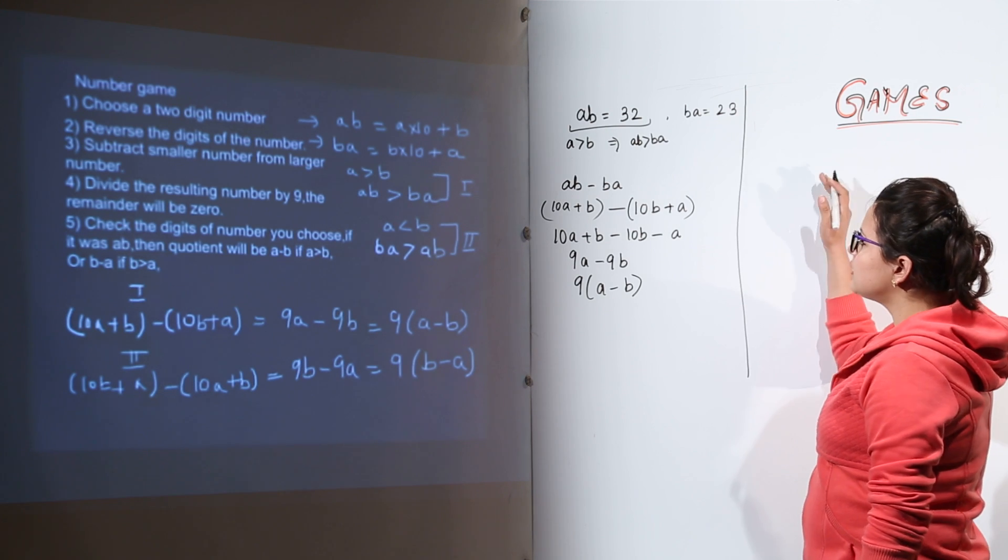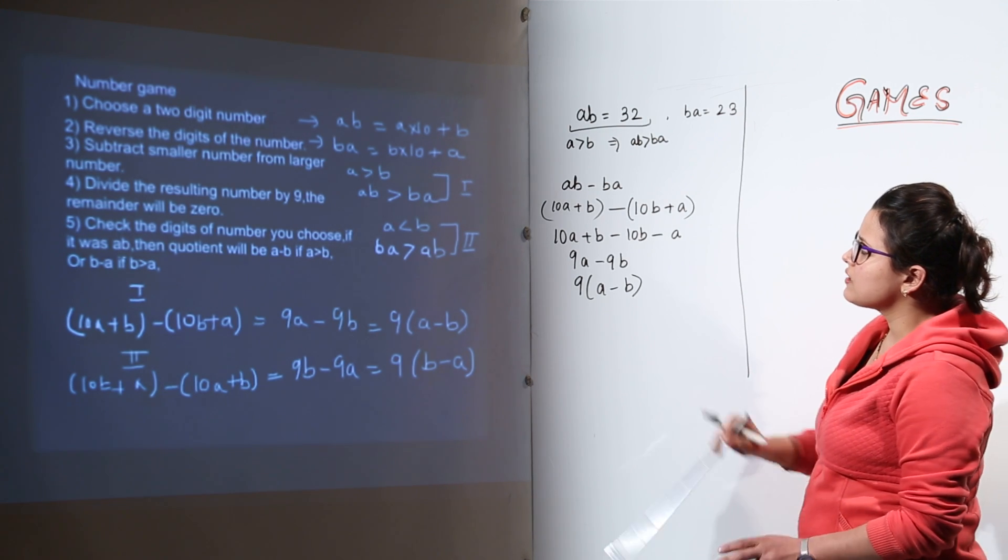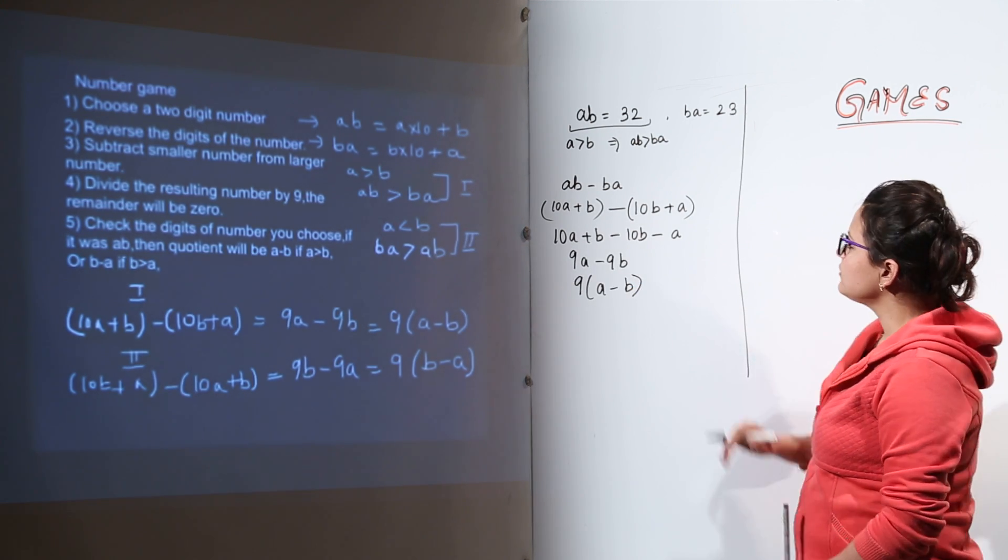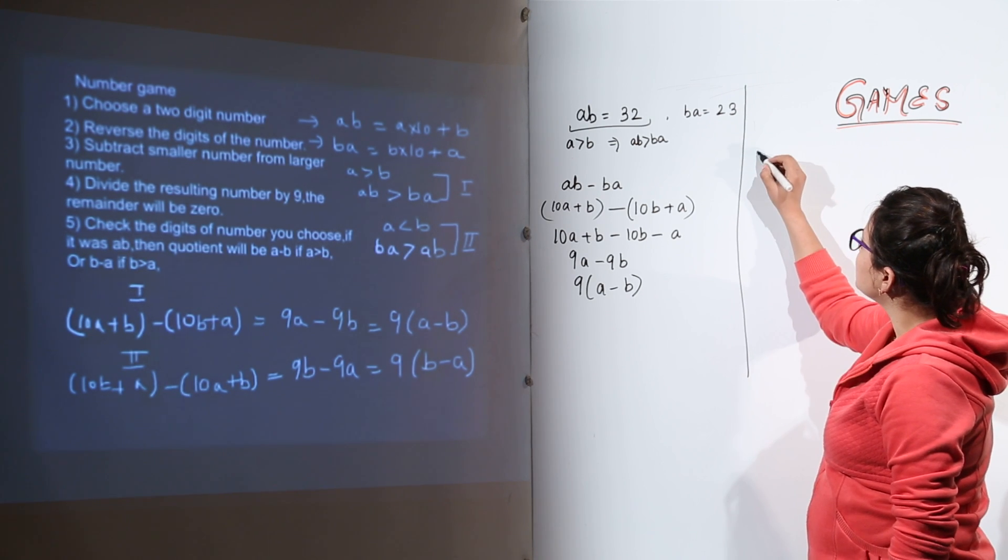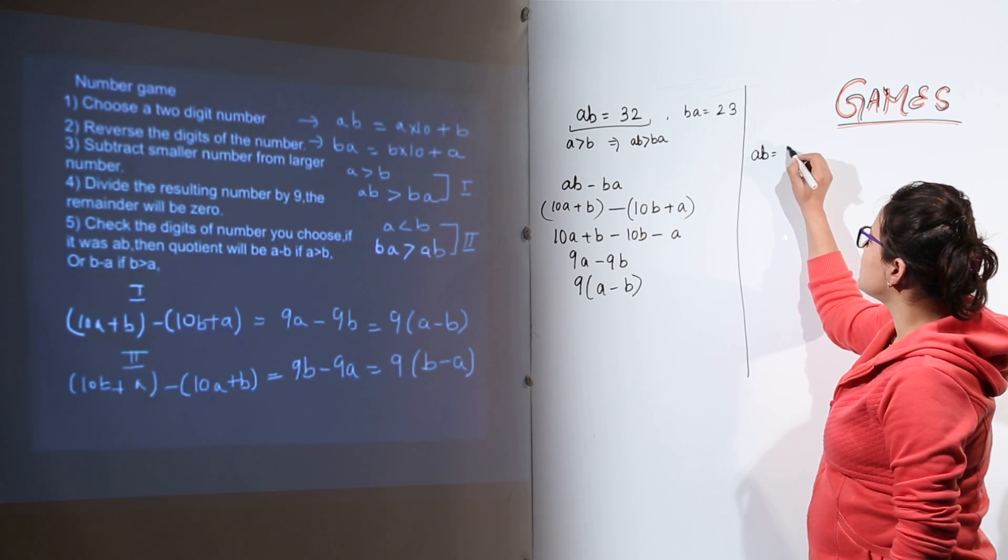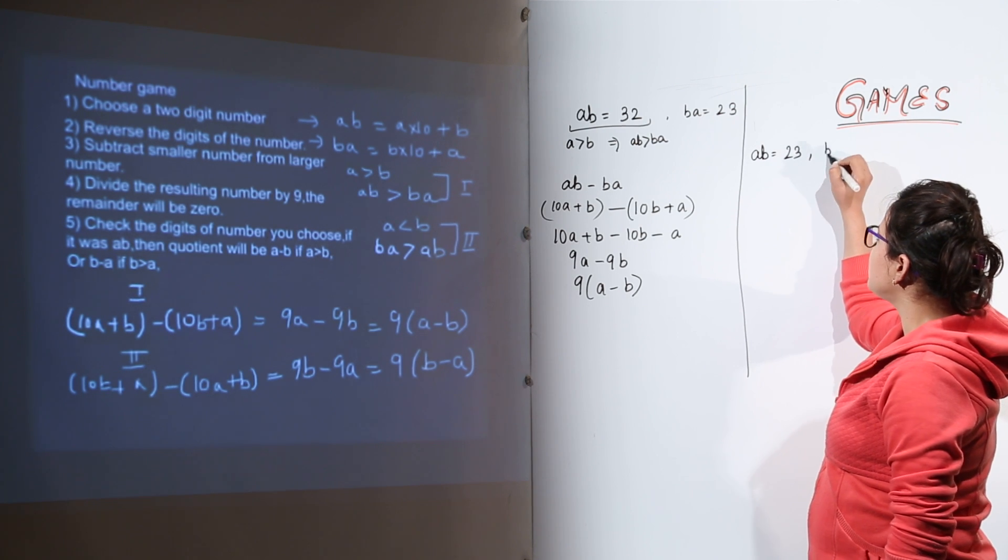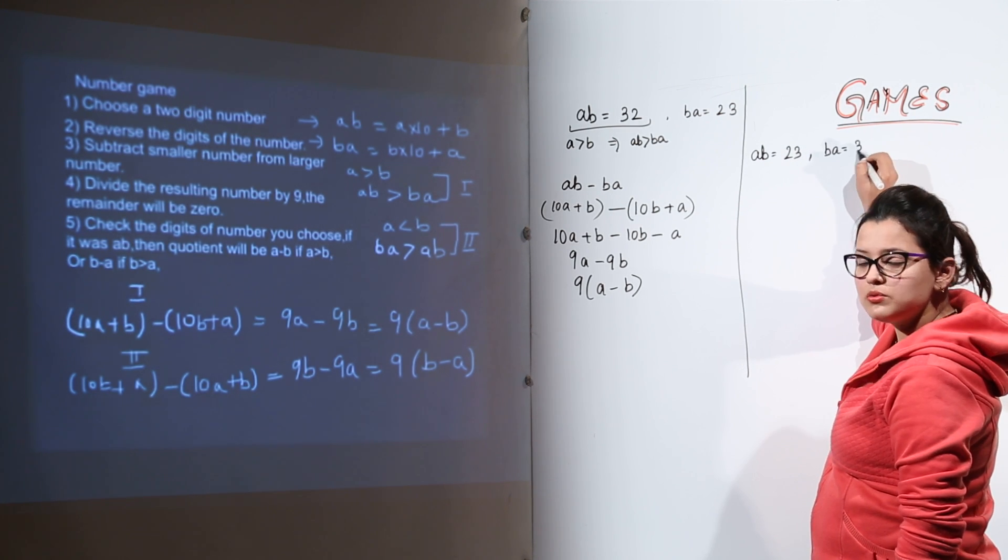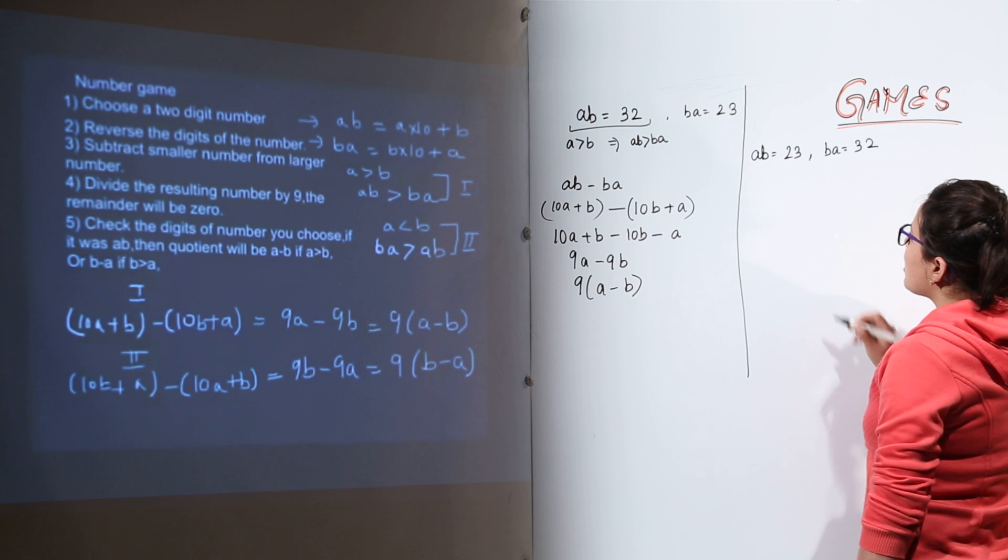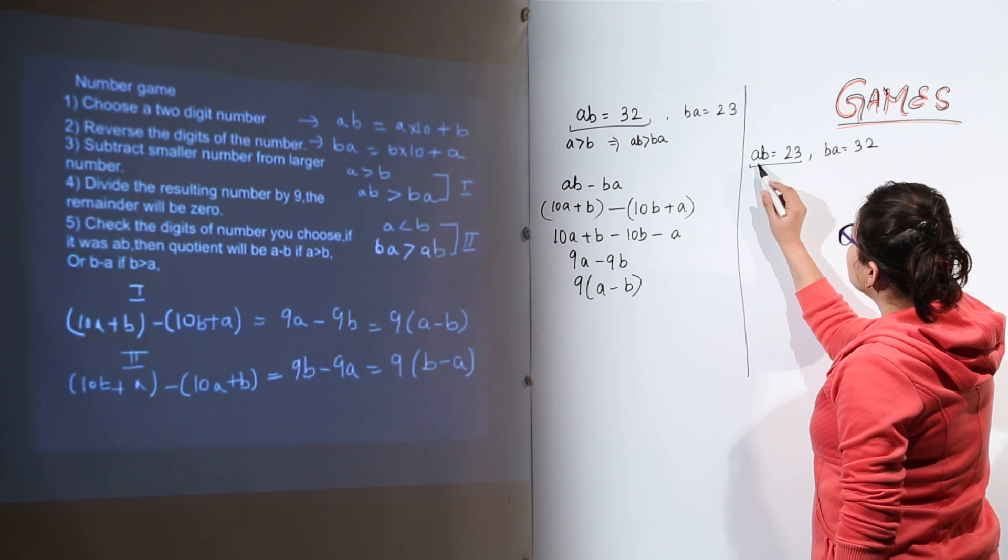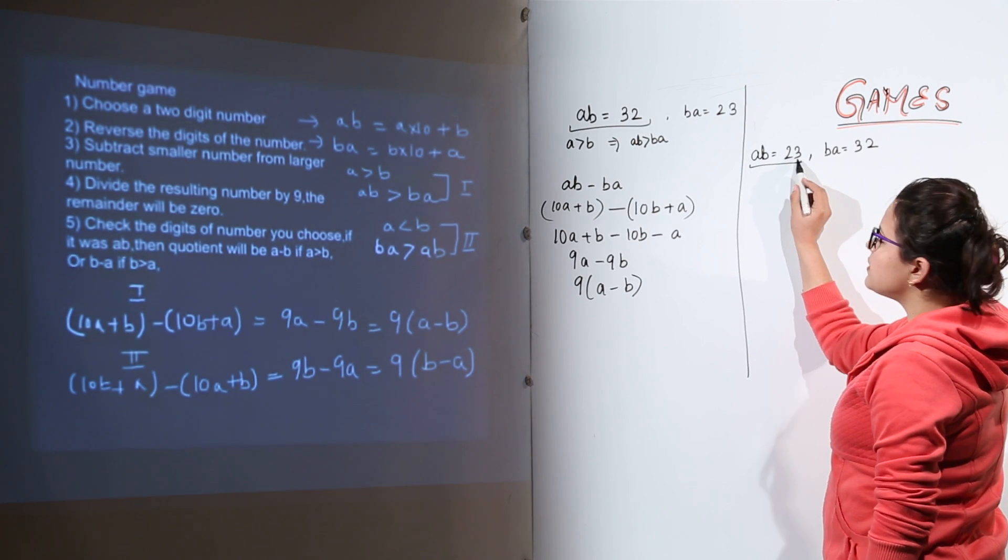Now if the other case would have happened just as I have shown over here. Let us check. If the other case would have been that means AB would have taken as 23 and BA would have become 32 reversing the digits. Now you check your digits. Out of this A is 2 and B is 3.